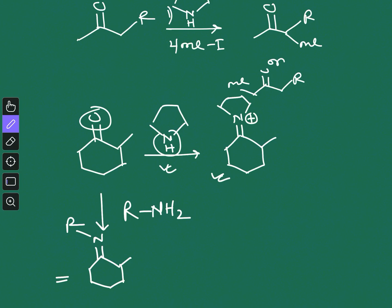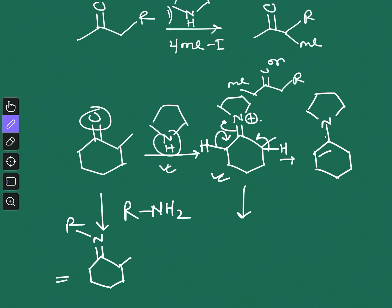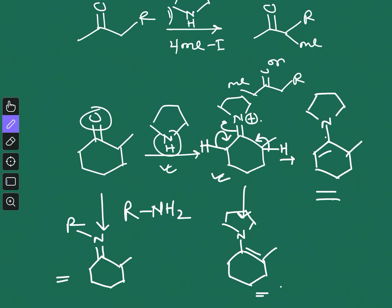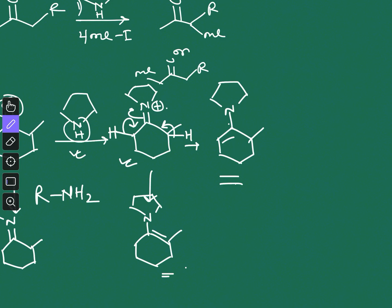Due to the presence of this positive charge, the iminium will try to become neutral. How can it be neutralized? If you eliminate a proton from this side, you get one enamine. Another way of neutralization is deprotonation from the other side, which gives a regioisomer of the enamine. So two regioisomers of the enamine are possible — either this one or this one. Now you have to decide which enamine will form.